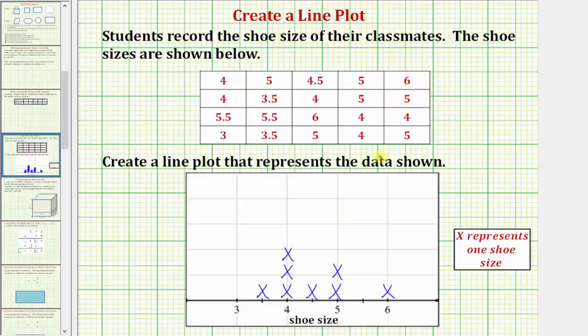Then we have two shoe sizes of five, so we have an x here, then another x here. And onto the third row, we have two shoe sizes of five point five, or five and a half, which would be between five and six here. Again, there are two shoe sizes of five point five, so one and two.